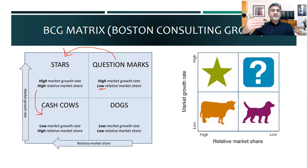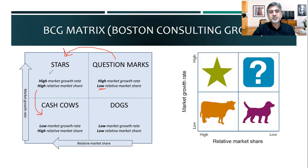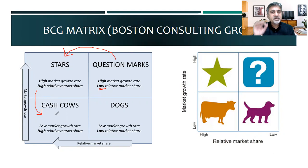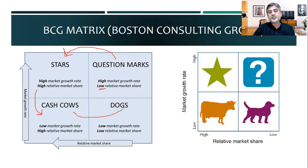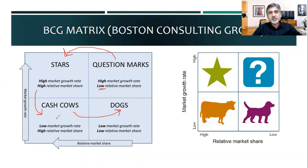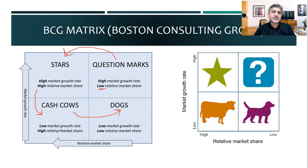Question marks can convert to stars. Stars are often converted to cash cows because for some products the market was expanding before but is no longer expanding — perhaps because technology is changing. As soon as stars become cash cows, you stop investing heavily. You know that very soon these cash cows may become dogs, so you keep your high share and try to take out as much as possible.